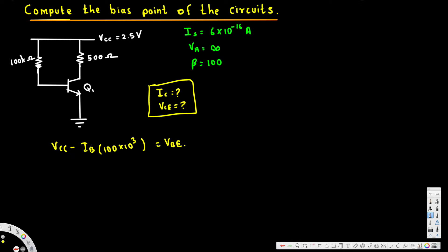Instead of Ib we can also use Ic over beta times 100 times 10 to the power of 3 is equal to Vbe. Now for Vbe there's a formula.